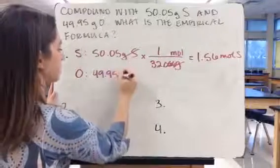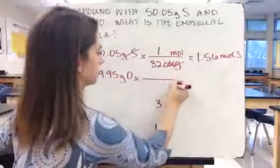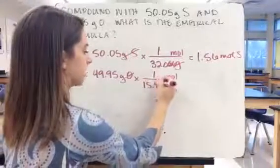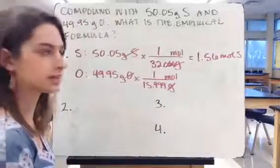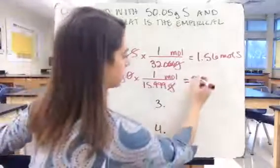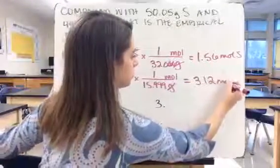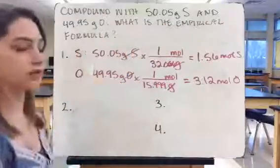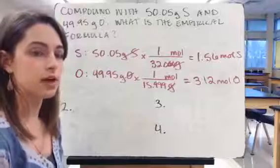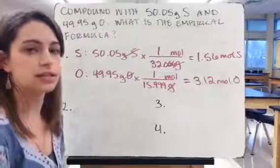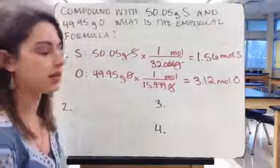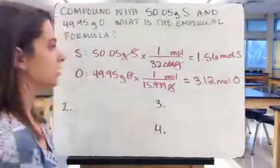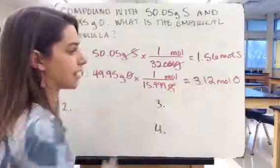Now for oxygen: we have 49.95 grams of oxygen. Putting grams on the bottom and moles on the top, we use the molar mass of 15.999 grams per mole, giving us 3.12 moles of oxygen. Note that if we just looked at the masses, we'd say they're roughly in a 1-to-1 ratio since both are about 50 grams. But we can't compare masses of different elements — we have to convert to moles to compare numbers of atoms. This tells us we actually have far more oxygen than sulfur in this compound.